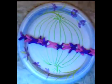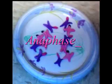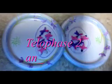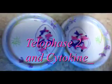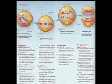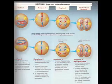In metaphase I, the pairs of homologous chromosomes are arranged at the metaphase plate with one chromosome from each pair facing each pole. Both chromatids of the homolog are attached to the kinetochore microtubules from one pole, while the other homolog is attached to the opposite pole. In anaphase I, the proteins responsible for sister chromatid cohesion break down and homologs separate, moving toward opposite poles in the form of sister chromatids. In telophase I, each half of the cell has a complete haploid set of replicated chromosomes, each composed of two sister chromatids. Cytokinesis occurs simultaneously with telophase I, forming two haploid daughter cells.